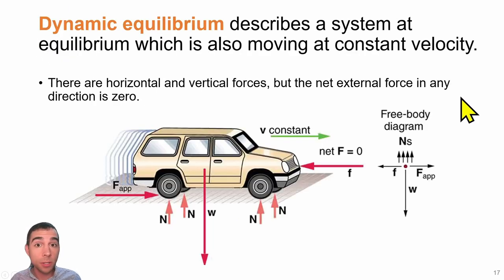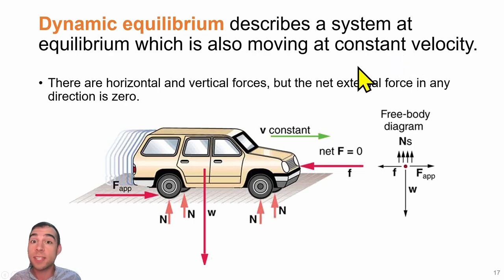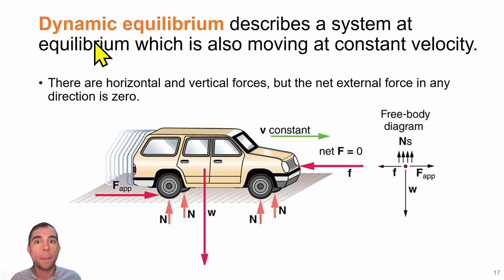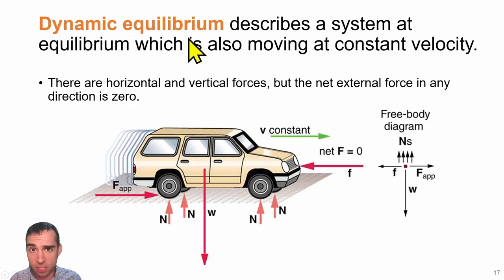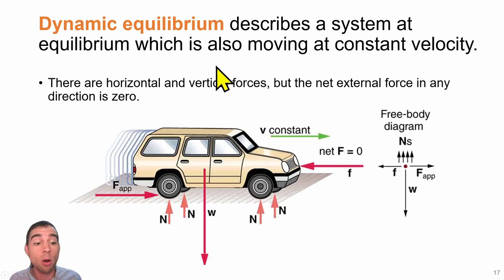However, we can also have a system moving at constant velocity that is considered equilibrium. We call this dynamic equilibrium because an object is moving but not changing its speed, and all the forces acting on the object still add up to cancel out, giving us a net force of zero in both the X and Y directions.